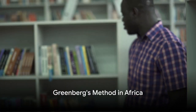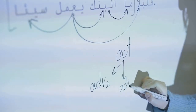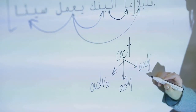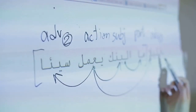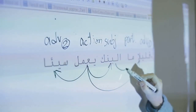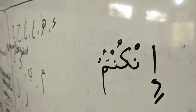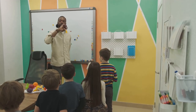Greenberg's method has been particularly influential in studying African languages, and it's his groundbreaking work on African languages that has brought him the most recognition and also the most debate. Starting with the Afro-Asiatic languages, Greenberg's method led him to propose a vast language family encompassing languages as diverse as Arabic, Hebrew, Amharic, and Somali. Critics argue that the similarities he identified could be due to borrowing or convergence, not shared ancestry. Yet despite these criticisms, the Afro-Asiatic language family is widely accepted today, demonstrating the enduring influence of Greenberg's approach.